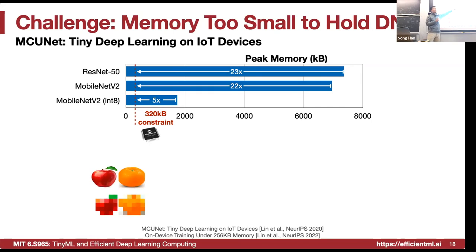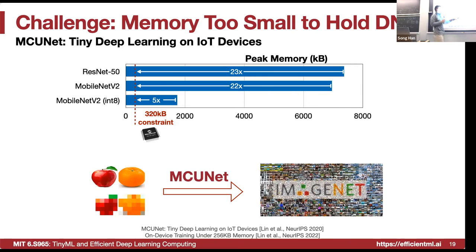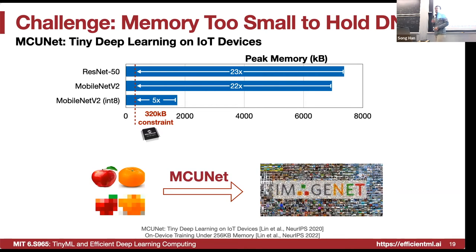Conventional approaches can only handle toy examples like classifying apples and oranges under low resolution on microcontrollers. But MCU-nets and Tiny Engine enable us to do ImageNet-level classification, reaching 70% top-1 ImageNet accuracy on a microcontroller.